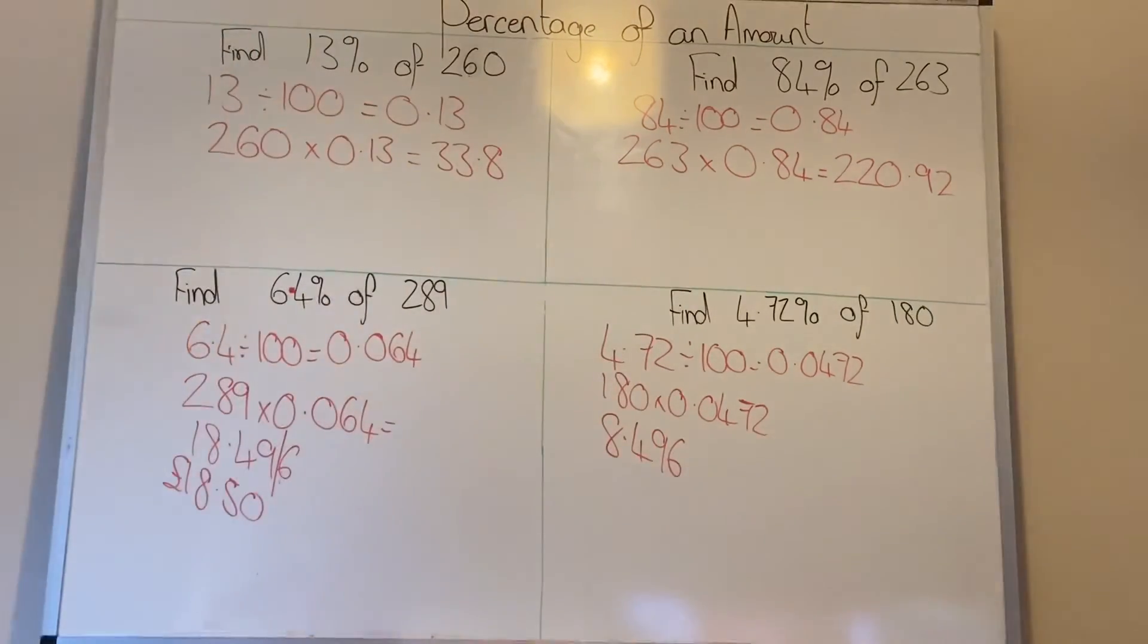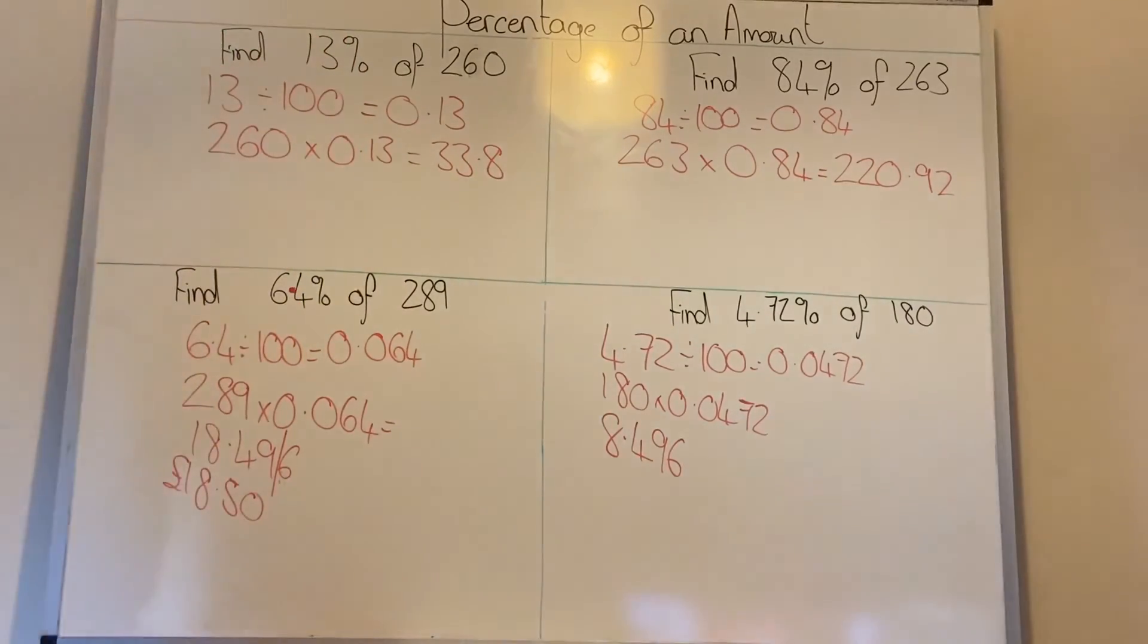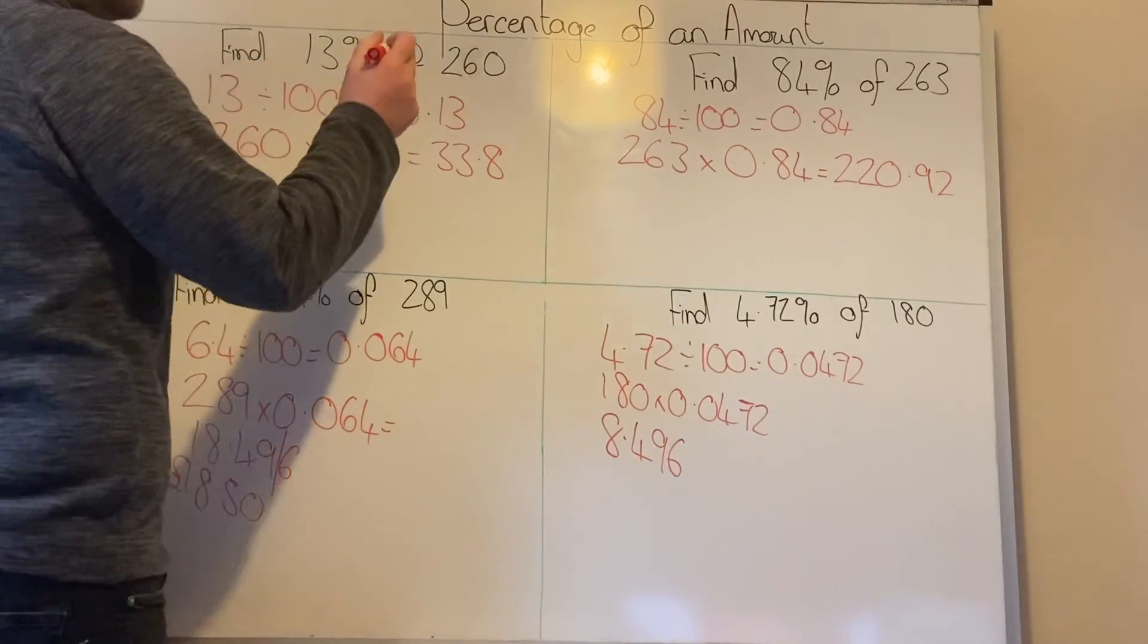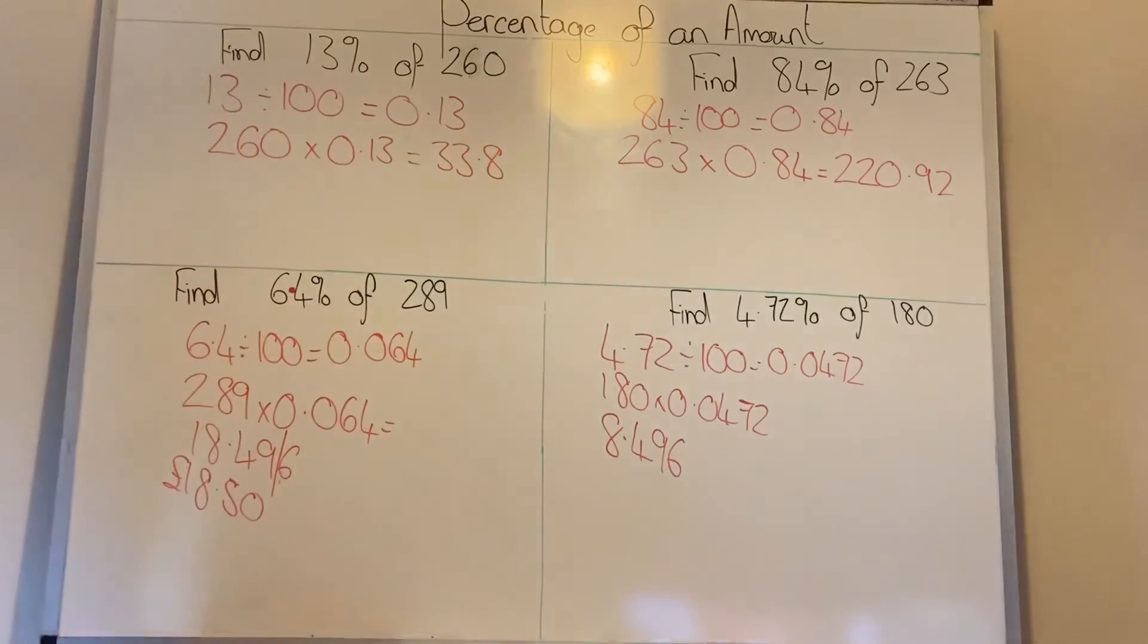Success criteria: First, divide your percentage by 100 to get a decimal multiplier. Then multiply your original amount by the multiplier to get your answer. If you've got any questions let me know. I'll give you a worksheet to go along with it. Have a good day guys.